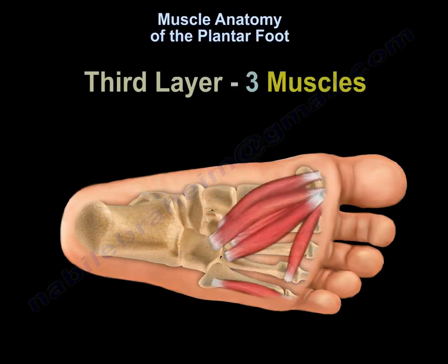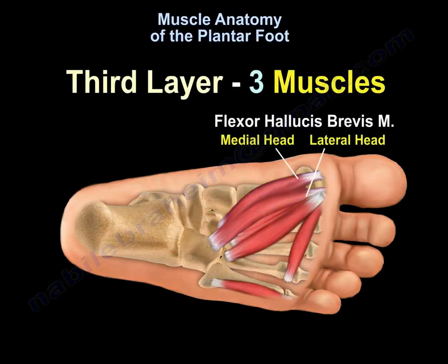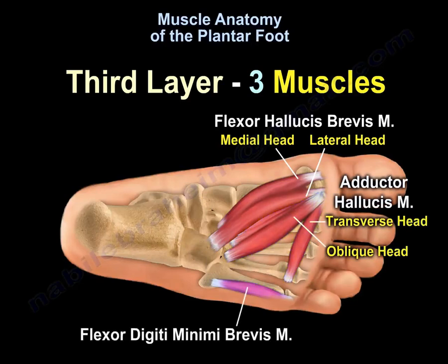The third layer has three muscles: the flexor hallucis brevis muscle, which has a medial head and lateral head; the adductor hallucis muscle, which has a transverse head and oblique head; and the flexor digiti minimi brevis muscle.